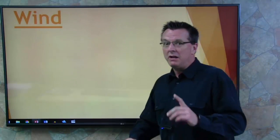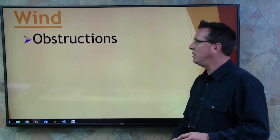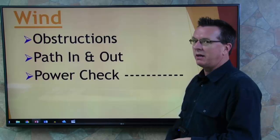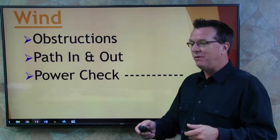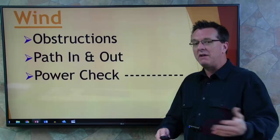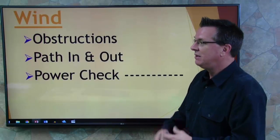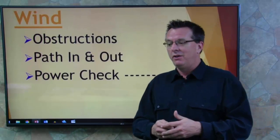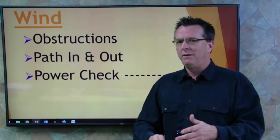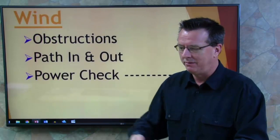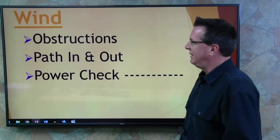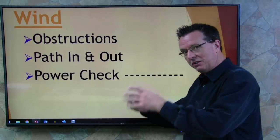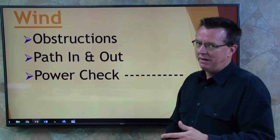Wind is probably your number one biggest concern — where is the wind at? Obstructions, your path in and out. Power check — how much power are you going to have available once you're down in the hole? You should have an idea of how much power you had at your first takeoff. You need to plan your fuel so that once you get into this confined area, you'll be able to get out. If you can't get out, you're going to have to burn off fuel, unload passengers, or wait till the weather cools.